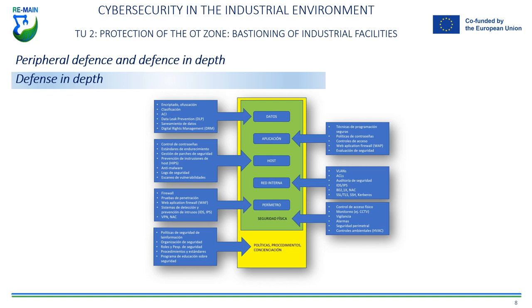In the industrial environment, defense in depth also involves implementing physical security measures such as surveillance cameras, access control systems, and intrusion detection systems. These physical security measures are combined with logical security measures to protect critical systems and reduce the risk of an attack.